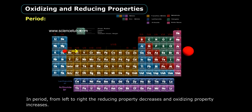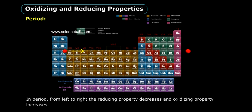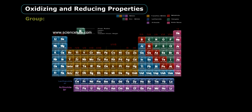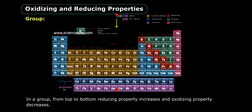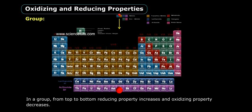In a period, from left to right, the reducing property decreases and the oxidizing property increases. In a group, from top to bottom, the reducing property increases and the oxidizing property decreases.